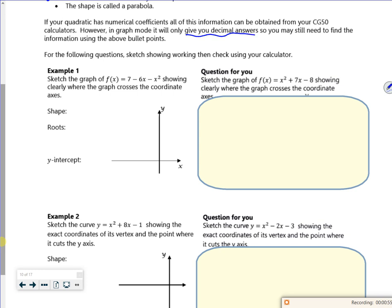Let's have a look at this question and then we'll plot it. So we've got f(x) = 7 - 6x - x². First of all, because that's a minus, because a is less than 0, it's going to be an n-shape curve.